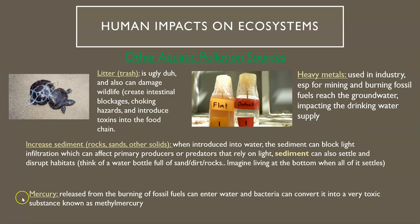Mercury is released from the burning of fossil fuels like coal, and once it enters the water, bacteria can convert it into something super toxic called methylmercury, which can cause damage to the fish, to the things that eat the fish, including humans. All four of these pollution sources — litter, heavy metals, sediment, and mercury — are very damaging and serious, and all four can be linked directly to humans.